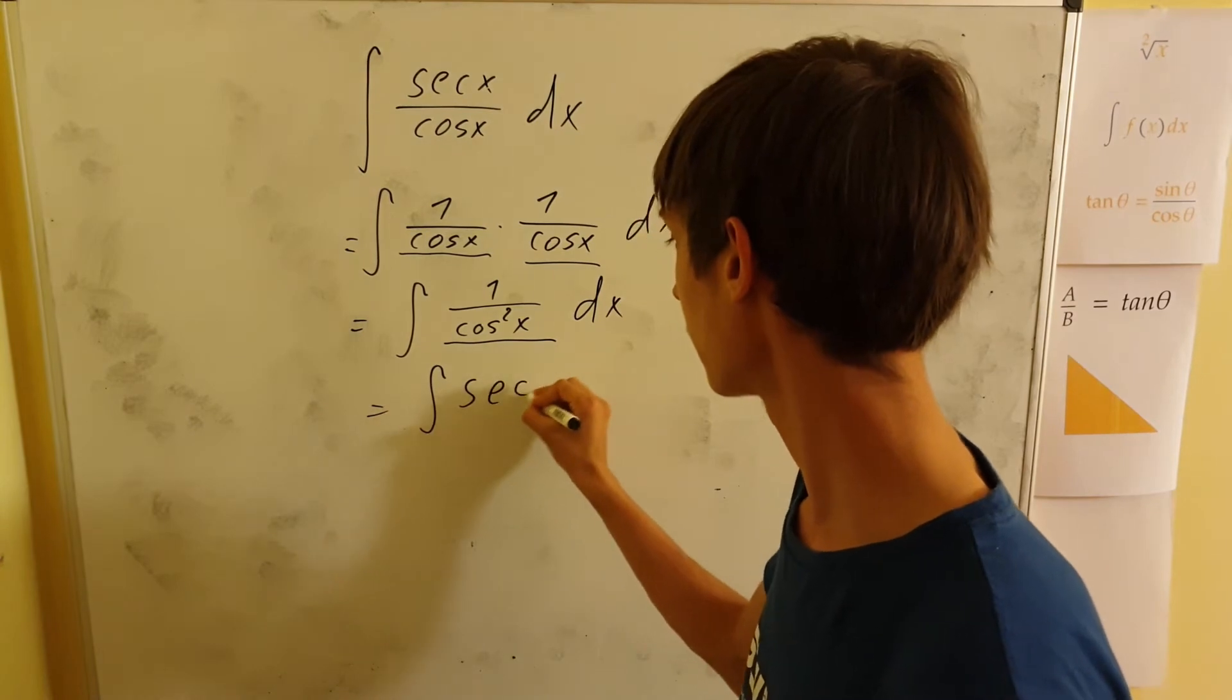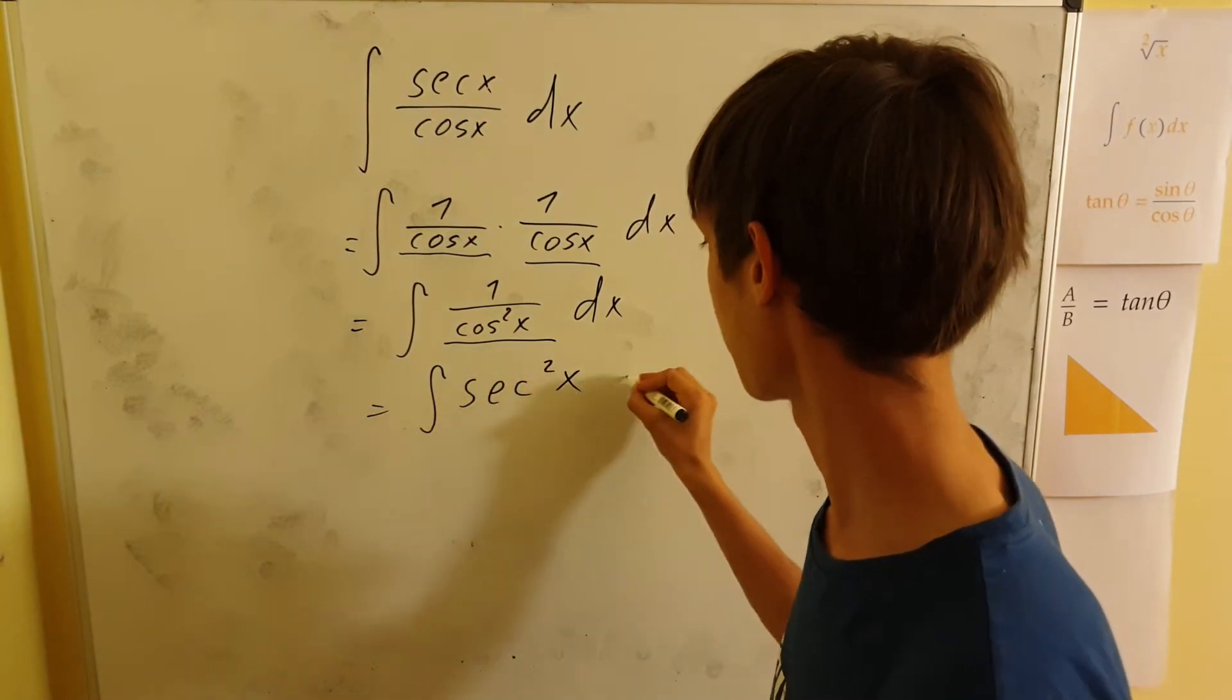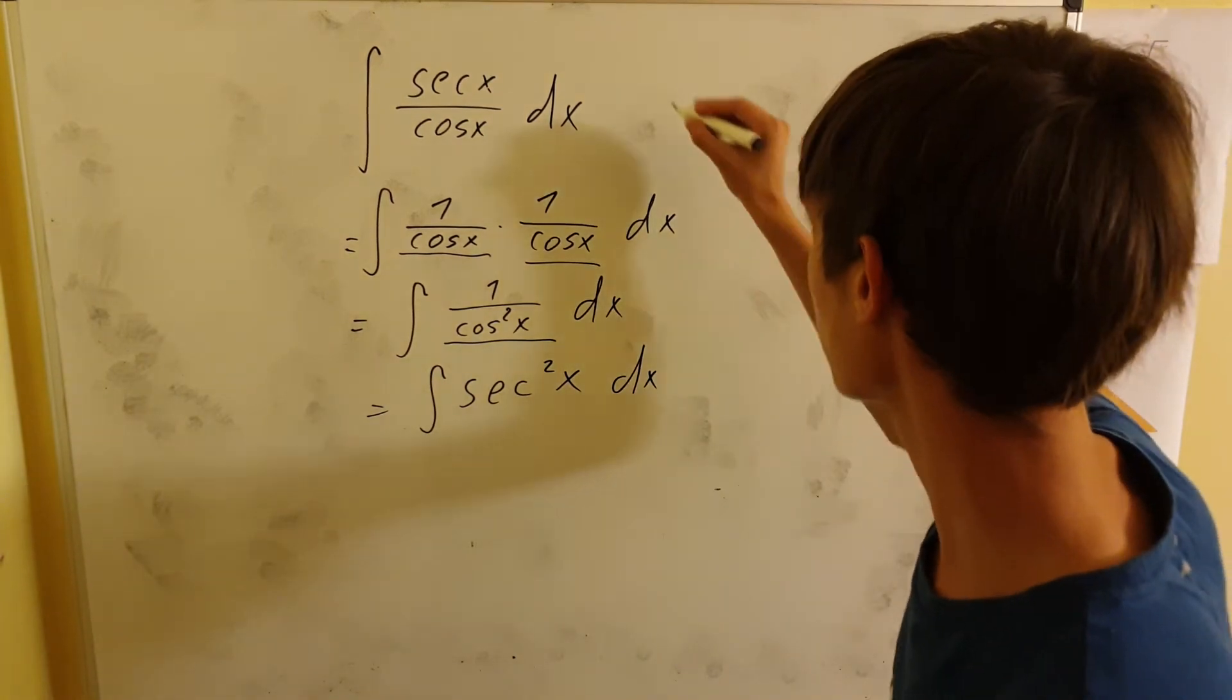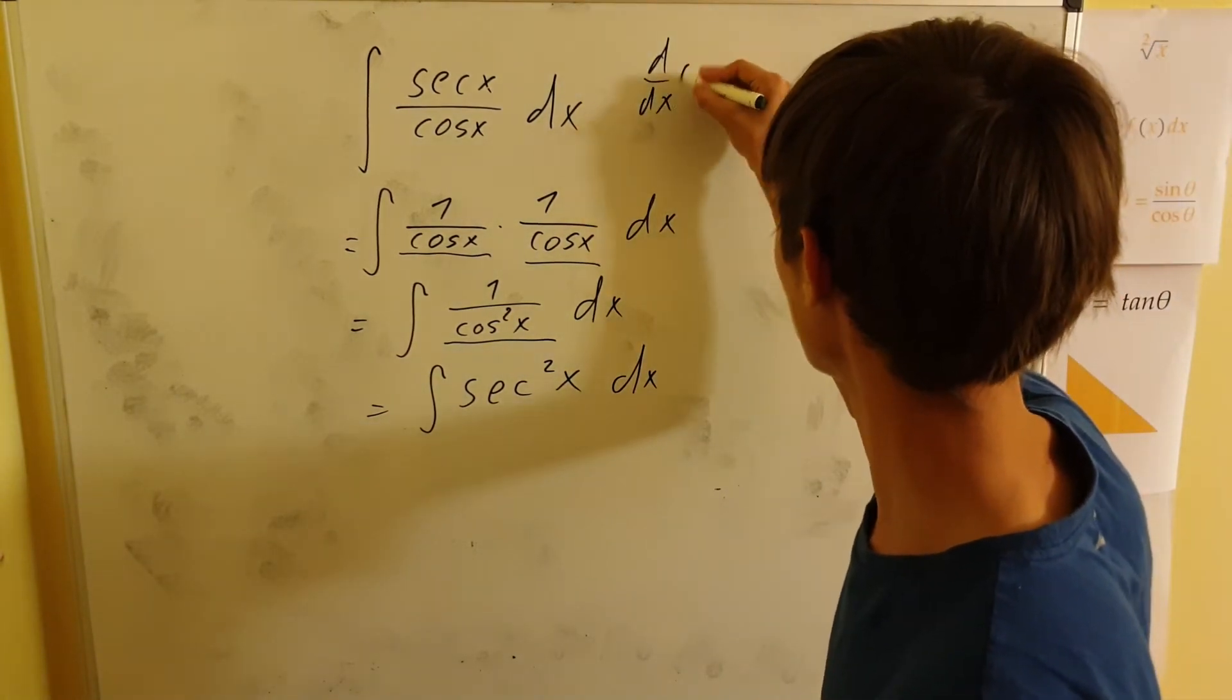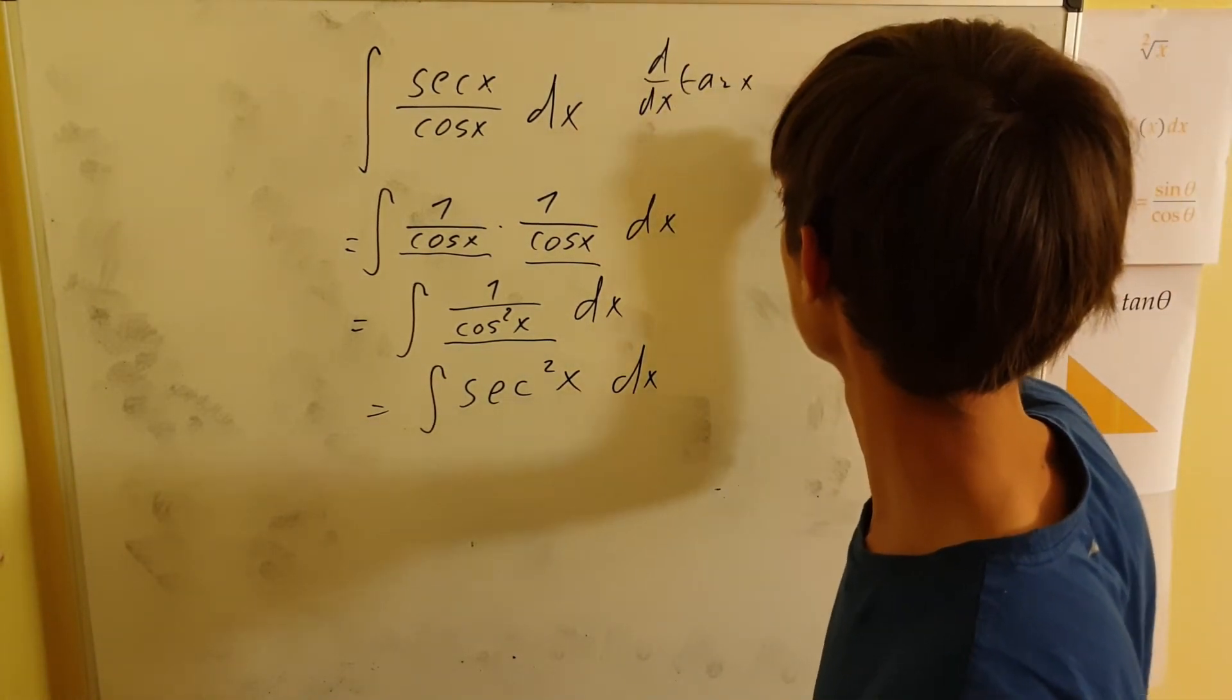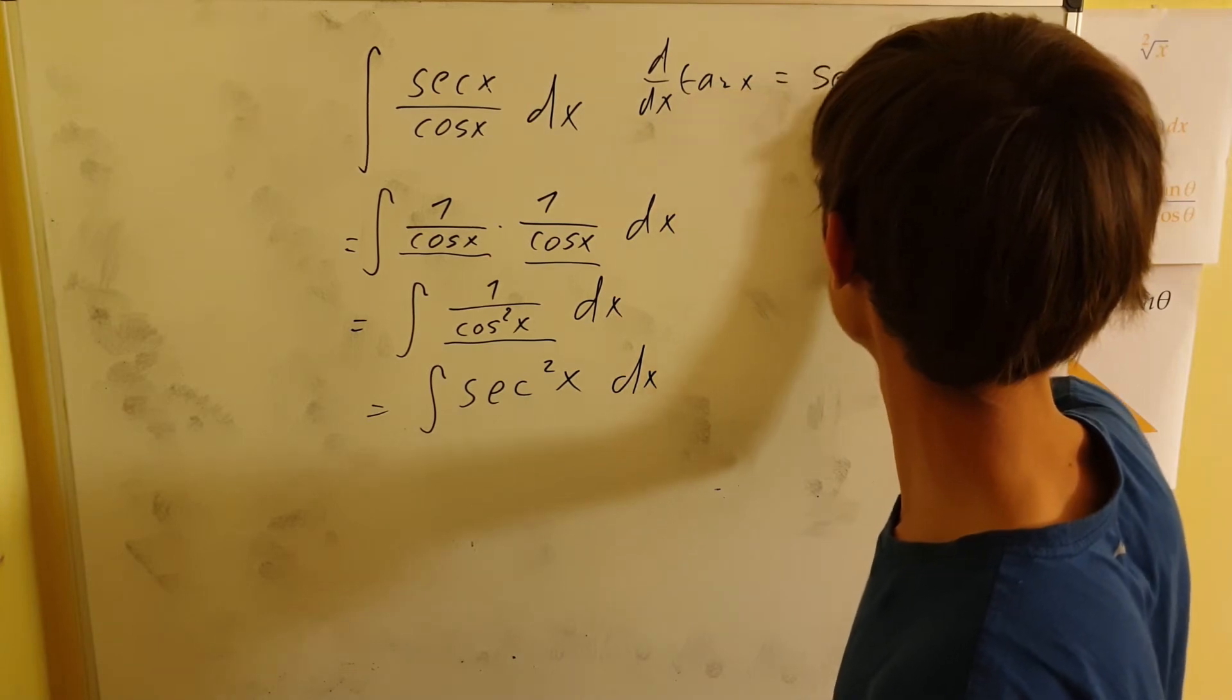Now we know this property that the derivative of tangent x is secant squared x, and therefore we know what the integral will be—it's the reverse process.